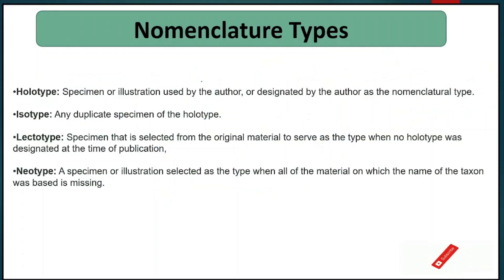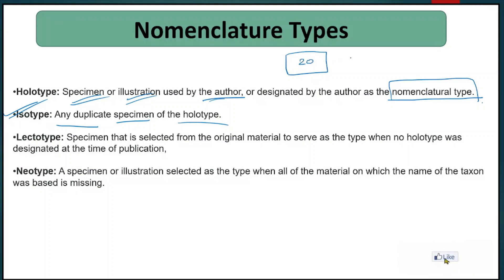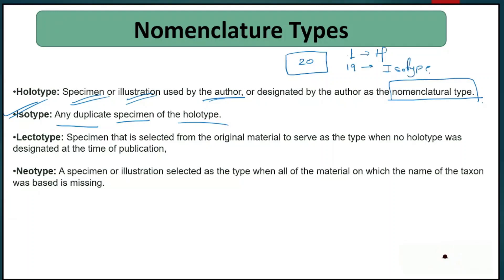Now let's look at the formal definitions. Holotype is a specimen designated by the authors and used as the nomenclature type. Isotype is any duplicate specimen of the holotype — in the field we collected 20 samples, one is the holotype, and the remaining 19 are isotypes because they were collected from the same time and place.